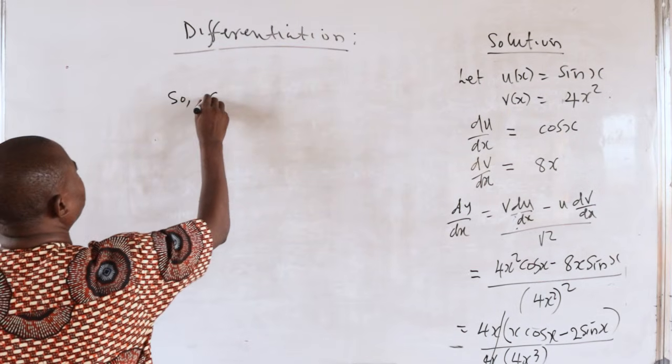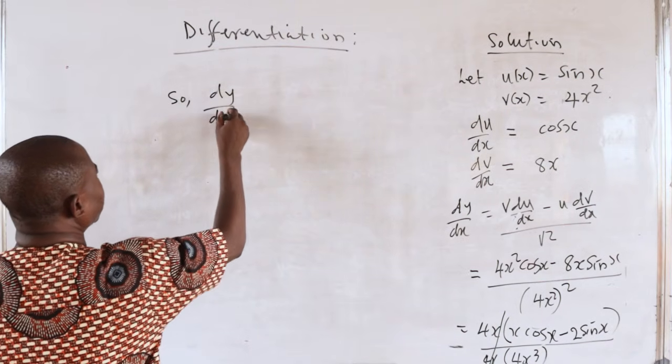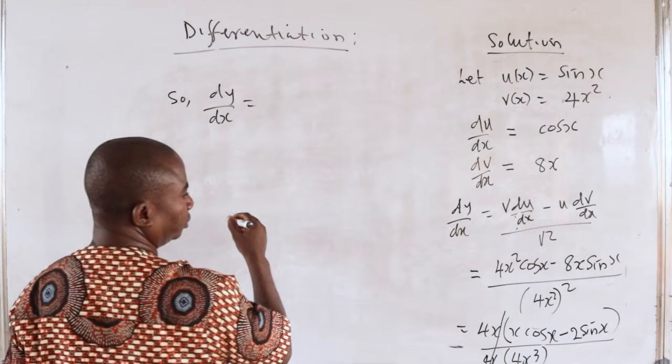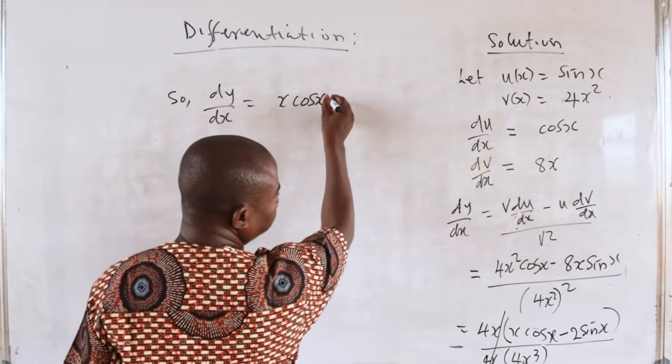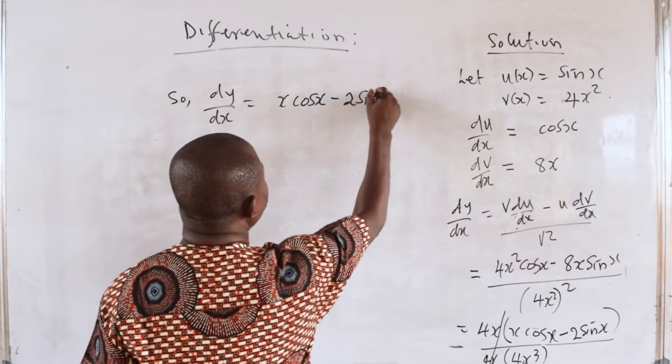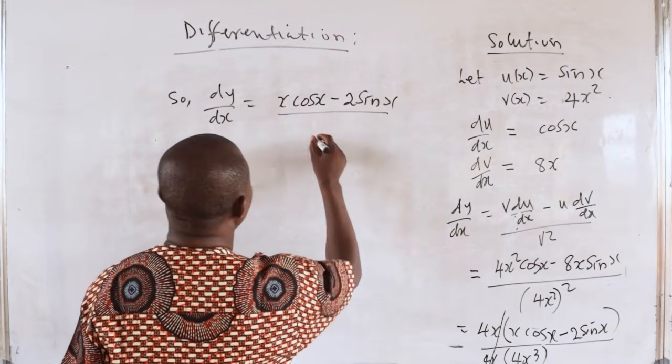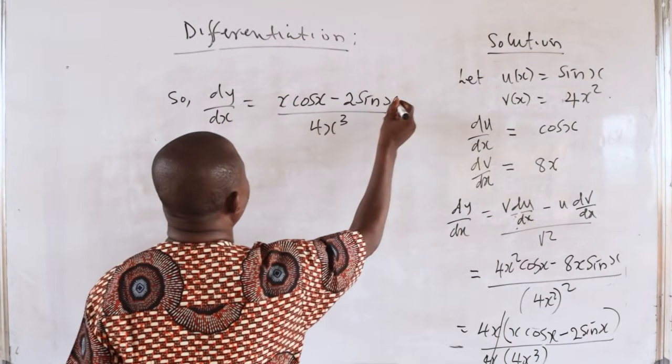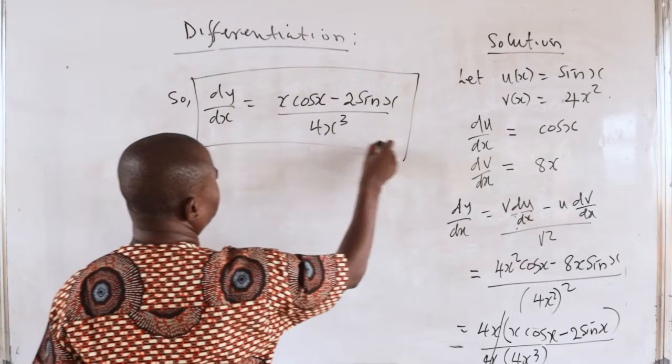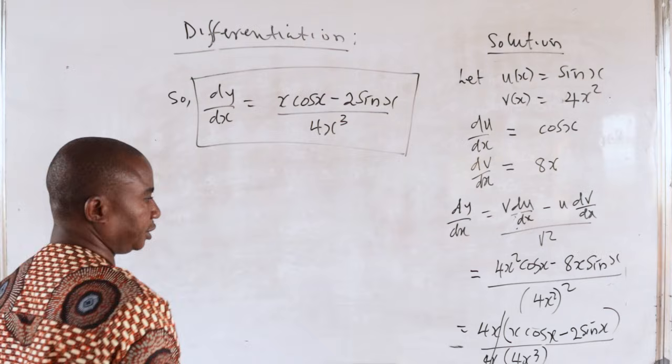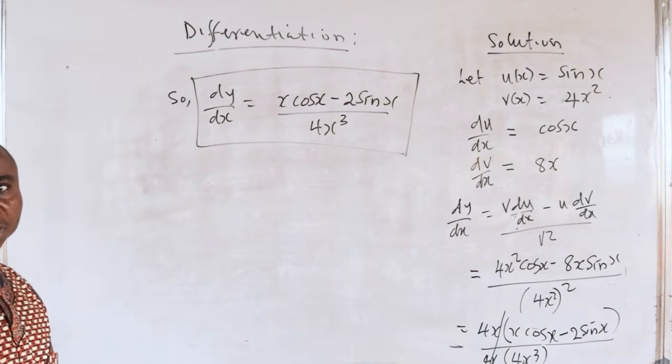dy/dx is equal to x cos x minus 2 sin x divided by 4x³. That is the derivative of x cos x.